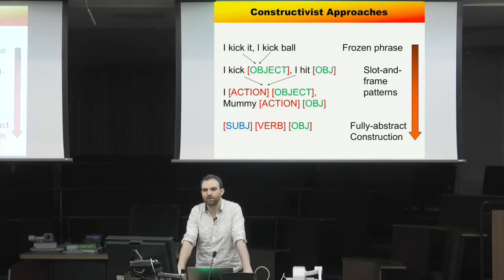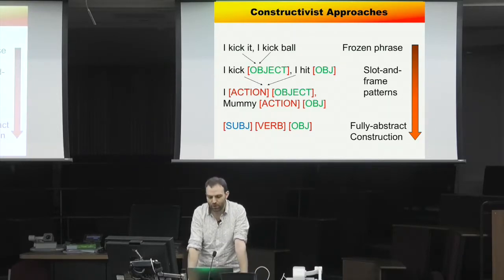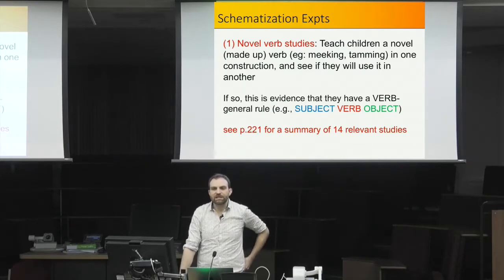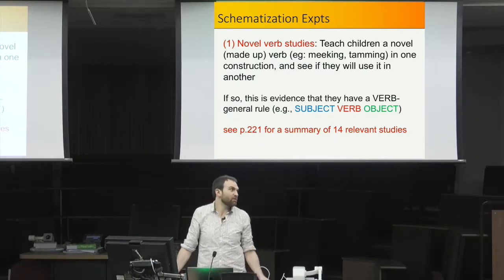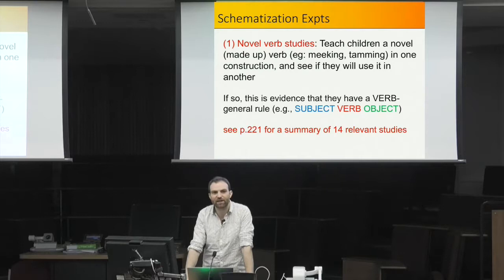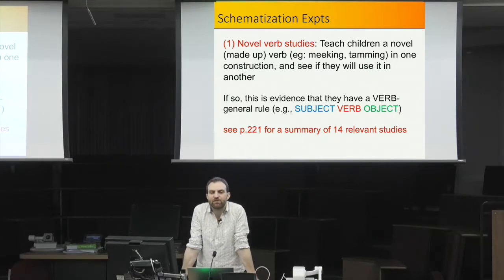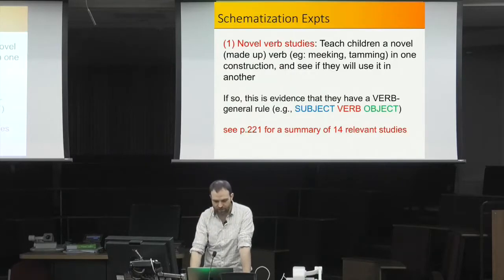Turning to constructivist approaches to basic word order: the idea is that children start with frozen phrases, move to slot-and-frame patterns, and then develop fully abstract constructions. We review studies investigating the constructivist claim that young children — Tomasello drew age three as a line in the sand for abstract syntax, though that's almost certainly too late — are using frozen phrases and slot-and-frame patterns and don't yet have a fully abstract subject-verb-object construction.